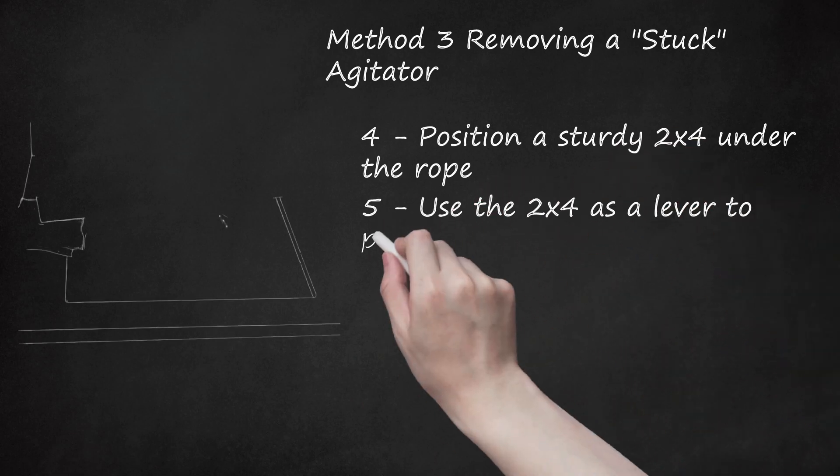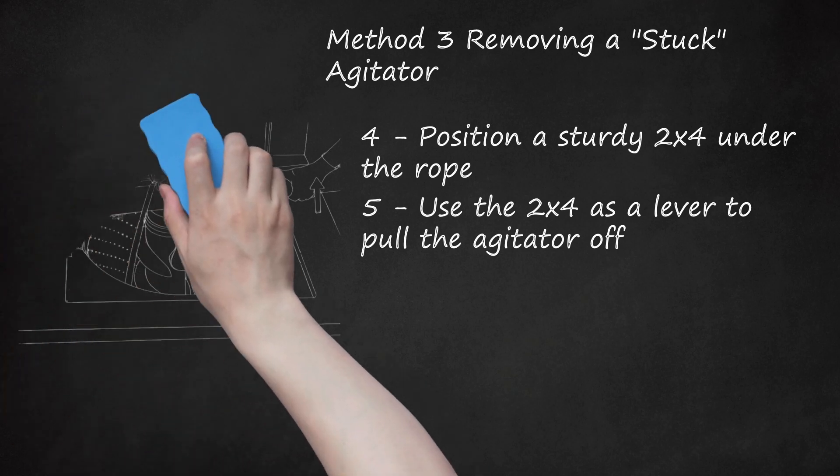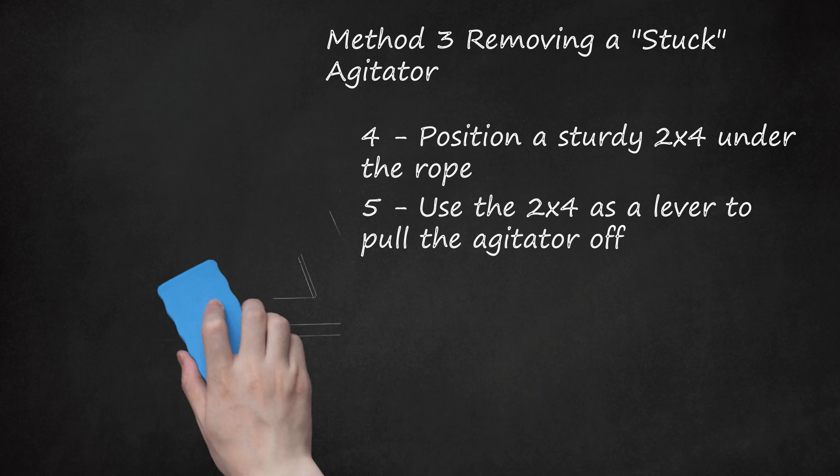Step 5: Use the 2x4 as a lever to pull the agitator off. Start putting firm pressure on the end of the piece of wood outside the washer. This will raise the end over the agitator, pulling it directly upward. Gradually increase the downward pressure on the lever until you are able to lift the agitator out. Beware, this can require quite a bit of force, especially if your agitator hasn't been removed in years. If you can't remove your agitator this way, call a mechanic. Using extreme amounts of pressure to push down on your lever is a surefire way to injure yourself, damage your washer or both, so play it safe.